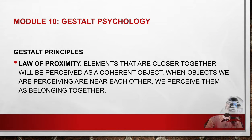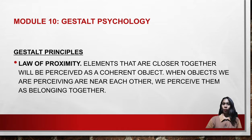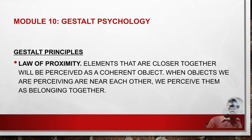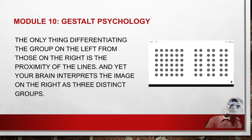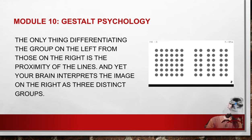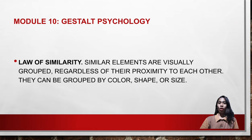The first law is the law of proximity. Elements that are closer together will be perceived as a coherent object. When objects are perceived near each other, we perceive them as belonging together. In the picture, the only thing differentiating the group on the left from those on the right is the proximity of the lines, and yet your brain interprets the image on the right as three distinct groups.